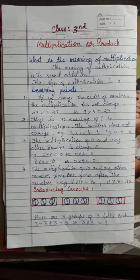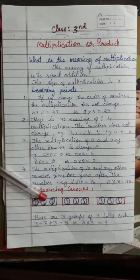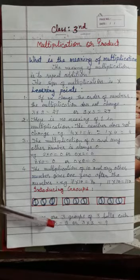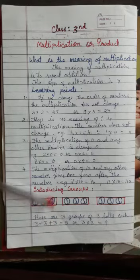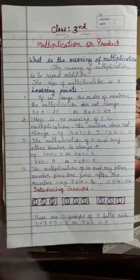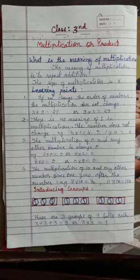Now, introducing groups. You can show this through groups. There are 3 groups of 3. These are 3 groups of 3 balls. You can add it as 3 plus 3 plus 3 and get the answer 9. You can also do it as 3 into 3 is equal to 9. 3 threes are 9.